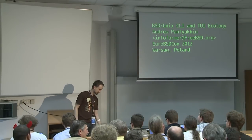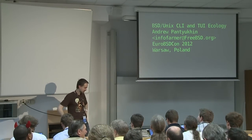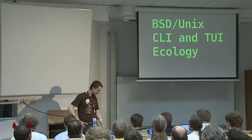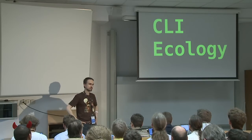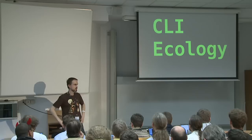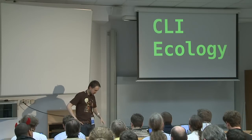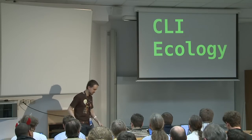Hello everyone. This talk is about a rather obscure topic: BSD Unix command line and text-based user interface ecology. If we simplify it, it's just CLI ecology really, because text-based user interface is basically part CLI and part GUI, and CLI is usually BSD Unix. So what is that? What am I talking about? What is ecology?